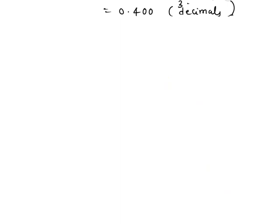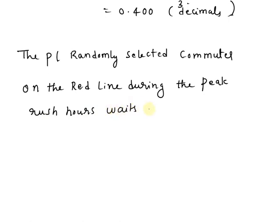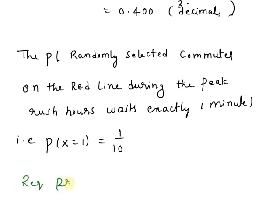Next, the probability that a randomly selected commuter on the Red Line during peak rush hours waits exactly one minute: P(x equals 1) equals 1 over 10. The required probability is equal to 1 over 10, that is equal to 0.1. I hope you understand this.